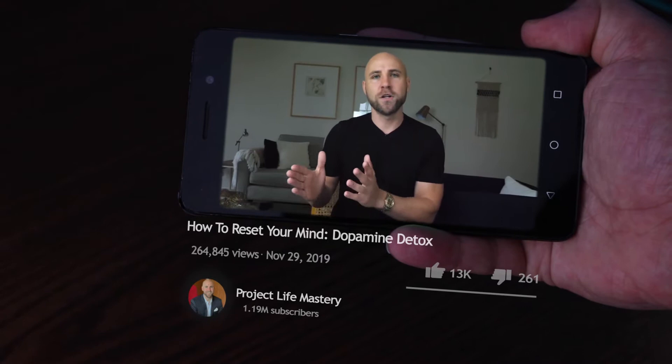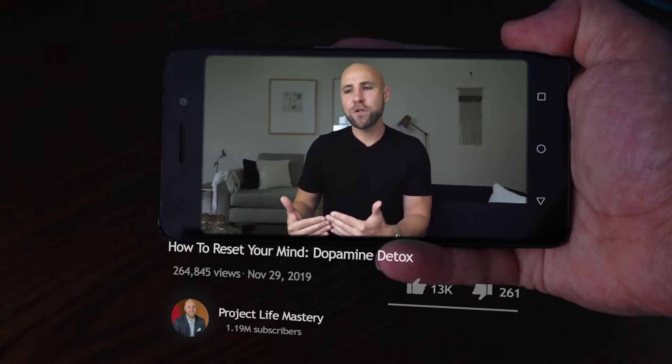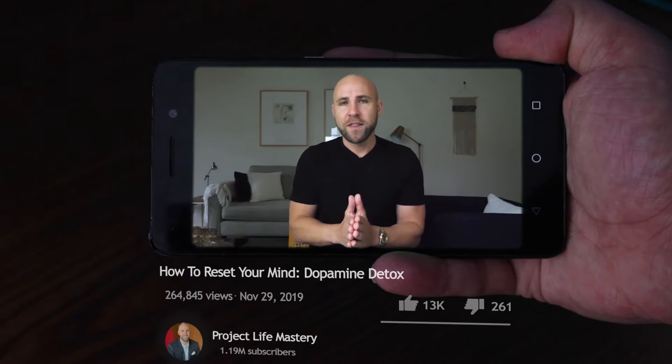But the other neurotransmitters you have to cultivate to balance things out are called the here and now neurotransmitters. And what those ones are are serotonin, endorphins, oxytocin, GABA. These are neurotransmitters that allow you to enjoy the present moment. They allow you to feel peace, satisfaction, calmness. And the way that you can detox this, it's called a dopamine detox, is really the solution for this.